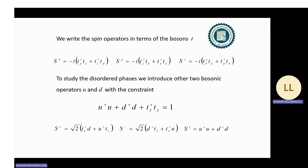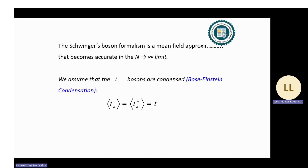We write the spin operator in terms of T_alpha bosons. To study the disordered phase, we introduce two additional bosonic operators, U and D, with the constraint given by this equation. The Schwinger boson formulation is a mean-field approximation that becomes accurate in the large-S limit, where we assume that the T_z bosons are condensed.